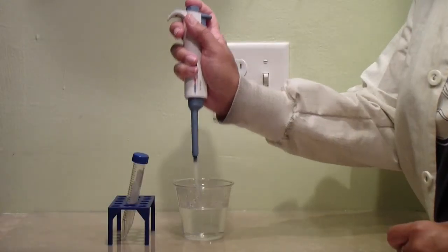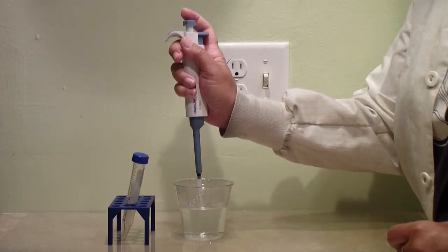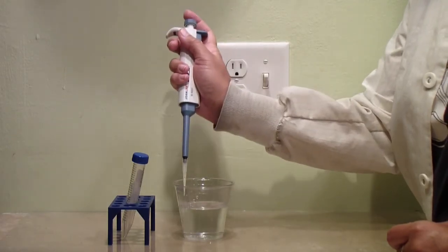Practice this several times so that you get a good feel of the plunger. When you are done with your practice, hold the pipette over the waste bin and press the eject button. The tip will drop into the waste bin.